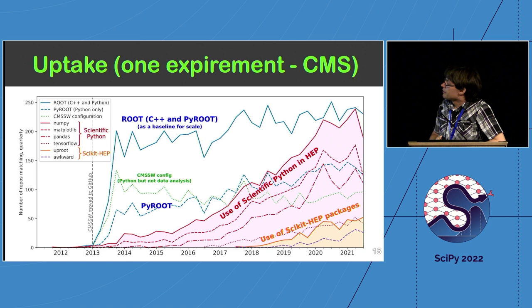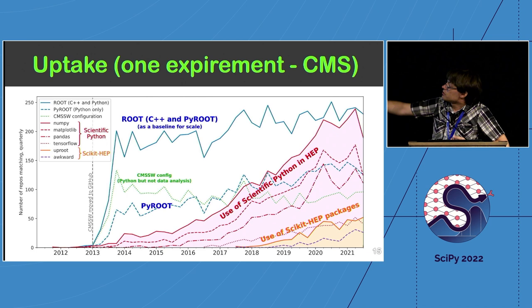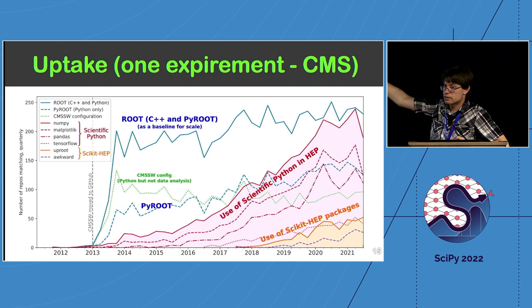Looking at the uptake of these packages: over time you can see the use of PyROOT versus C++, and then the scikit-hep packages starting to get used beginning around 2016. This is looking at the CMS experiment specifically because it's easy to pull out that one experiment's forks of the repository, and you can see it starting to get used.